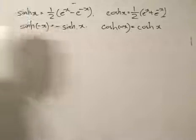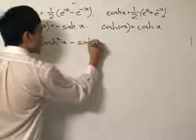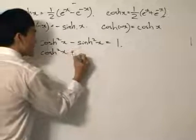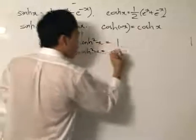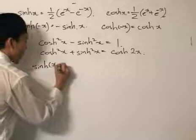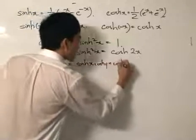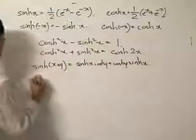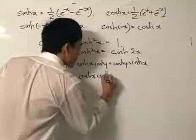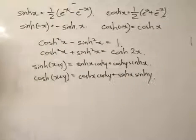Now a few identities — this is where confusion may occur, so pay close attention. First: cosh²x minus sinh²x equals 1, as opposed to plus 1 for trigonometry. Second: cosh²x plus sinh²x equals cosh 2x. Third, the addition formula: sinh(x + y) equals sinh x cosh y plus cosh x sinh y — the same as trigonometry. However, for cosh: cosh(x + y) equals cosh x cosh y plus sinh x sinh y, as opposed to minus for trigonometry.